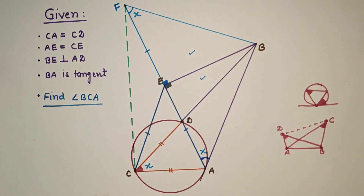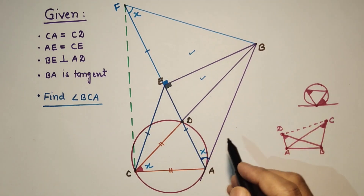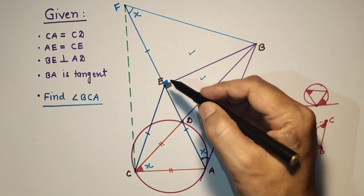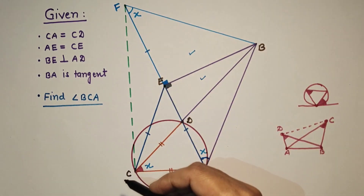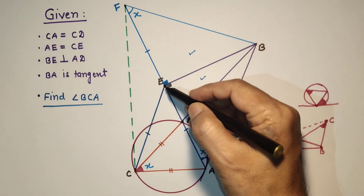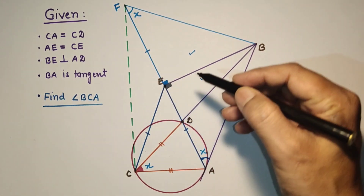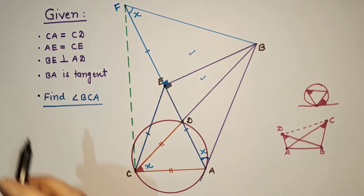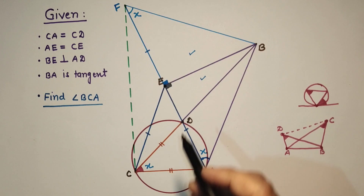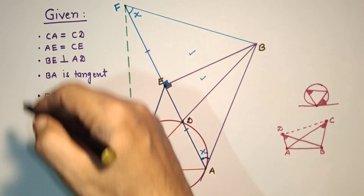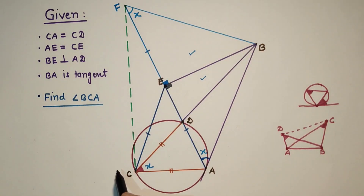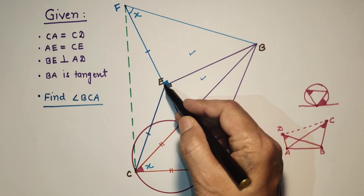Since BFCA is a cyclic quadrilateral, and E is a point such that EF equals EA (by construction) and EA equals EC (given), point E is equidistant from F, C, A, and B — all of which lie on the circumference. Therefore, E is the center of the circle passing through C, A, B, and F.